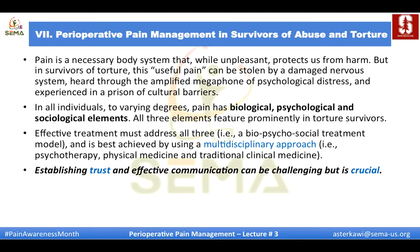Pain is generally a useful body mechanism to alarm us about something harmful to avoid. However, in survivors of torture, this useful pain signal is amplified through the megaphone of psychological distress and cultural barriers. Pain has biological, psychological, and sociological elements — all of which are more predominant and very important in torture survivors. Effective treatment must address all three areas, and this is best achieved through a multidisciplinary approach that includes psychotherapy, physical medicine, and traditional clinical medicine.